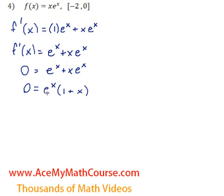Great. So e to the power of x is never equal to zero. But if I plug in a negative 1 for x, we would get zero overall, because zero times e to the x is just zero. So that is our critical number. And that is within the interval. That's between negative 2 and zero.